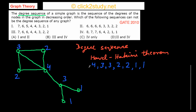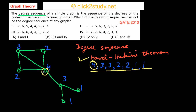Now we need to talk about the important Havel-Hakimi theorem. I'm not going to prove this theorem, but I'll show you how it works. You choose the vertex of the maximum degree in your sequence — here the maximum degree is 4 — and you remove that vertex to see what happens.